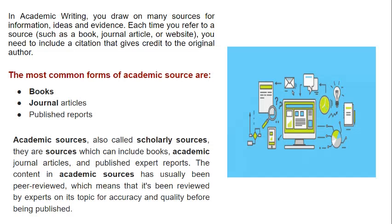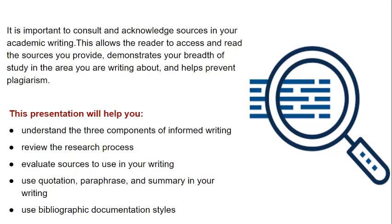Each time you refer to a source — maybe a book, a journal article, or website — you need to include a citation that gives credit to the original author. For your academic write-ups, you may use academic sources, also called scholarly sources, which can include books, academic journal articles, and published expert reports. The content in academic sources has usually been peer-reviewed, which means it has been reviewed by experts for accuracy and quality before being published. This allows the reader to access and read the sources you provide, demonstrates your breadth of study, and helps prevent plagiarism.